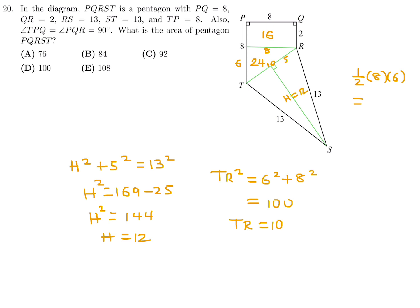The area of that triangle can be calculated again, one half base times height. The base is 10, and the height I just got is 12, so that's going to be 60. So the total area is 16 plus 24 plus 60, and that is equal to 100. And therefore, number 20, the answer is D.